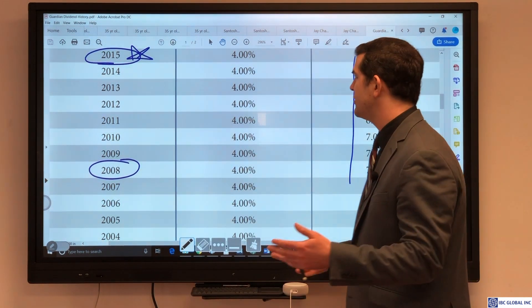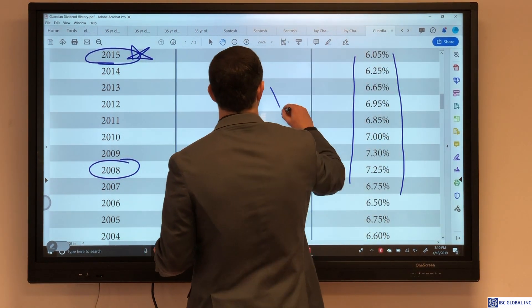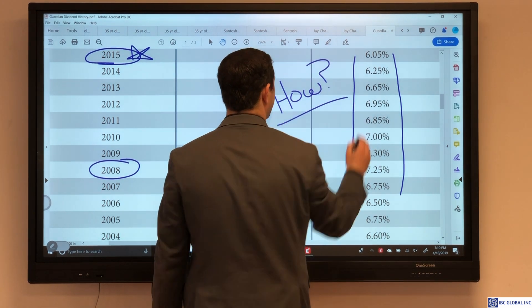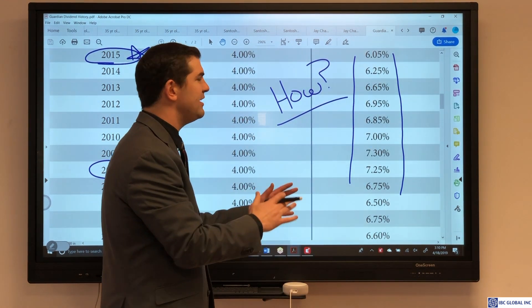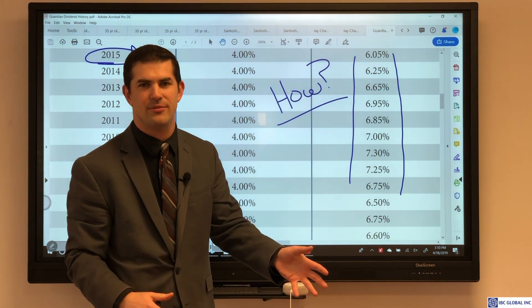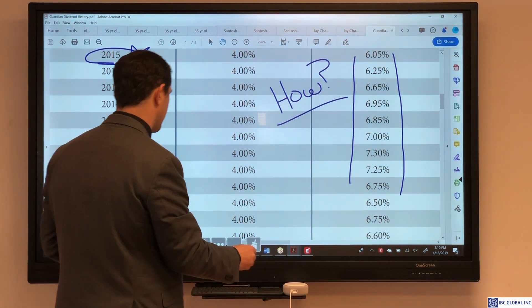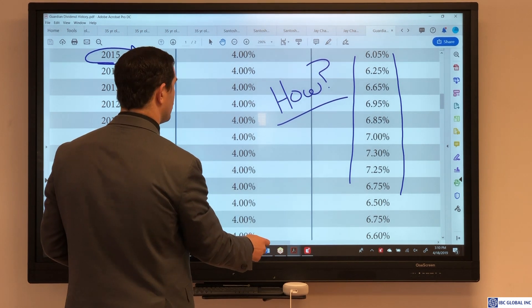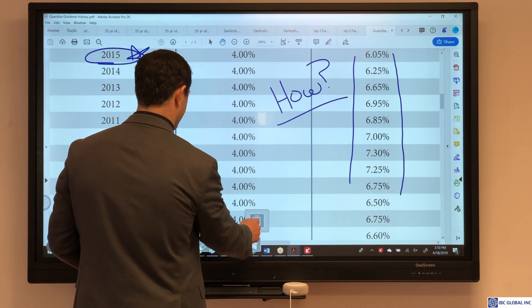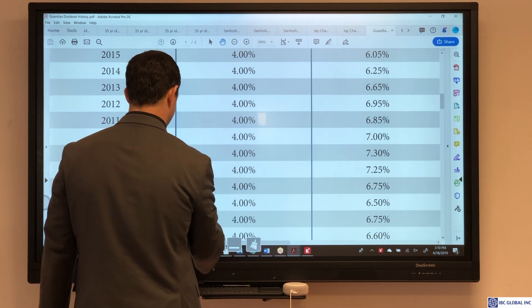The question that we hear often is how? How are insurance companies driving these returns, even if it nets out to four percent with no risk? Because they're not investing in the market. So the question really is where do insurance companies invest their money? So let's take a look.